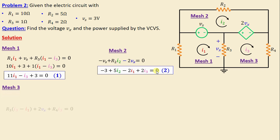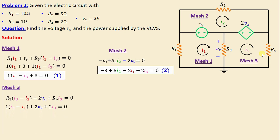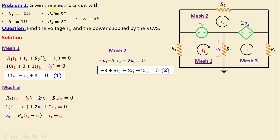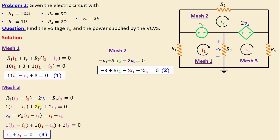For mesh three, applying Kirchhoff's voltage law: R3 times (i3 minus i1) plus 2 vx plus R4 times i3 is equal to zero. Replacing resistors with their numerical values and substituting vx equal to R3 times (i1 minus i3), where R3 equals 1, so vx equals i1 minus i3, we simplify to obtain: i3 plus i1 is equal to zero.